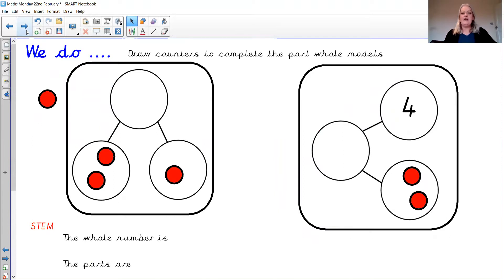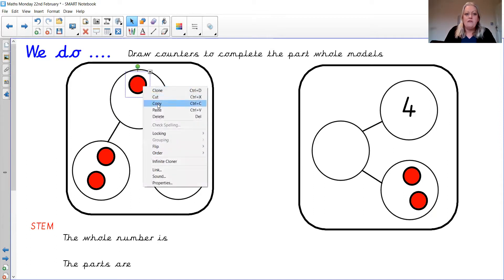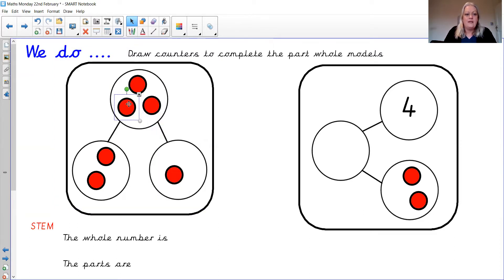We're going to move on a little bit with objects because we have done quite a bit with objects at school. We're going to put counters in for our part-whole models. Now we're going to draw our counters in. So this first diagram here, this first one has our whole number at the top and our parts have been filled in for us. So I know my parts are, what are my parts in the first one? That's right, it was two and one. So what's my whole number? That's right, my whole number is three. So if I put in one, two, three. So the whole number is three and my parts are two and one. Could you say that for me please?